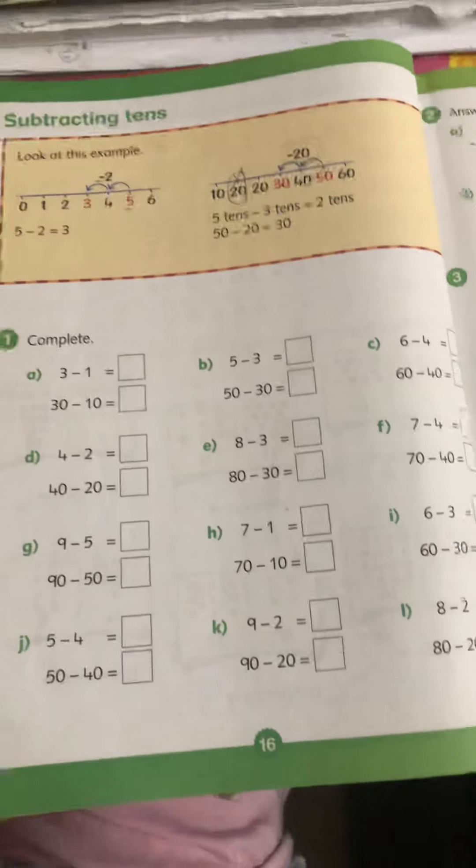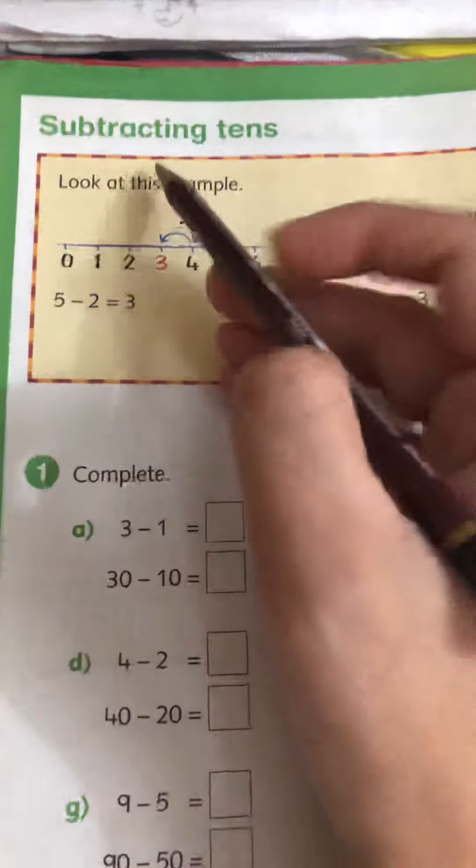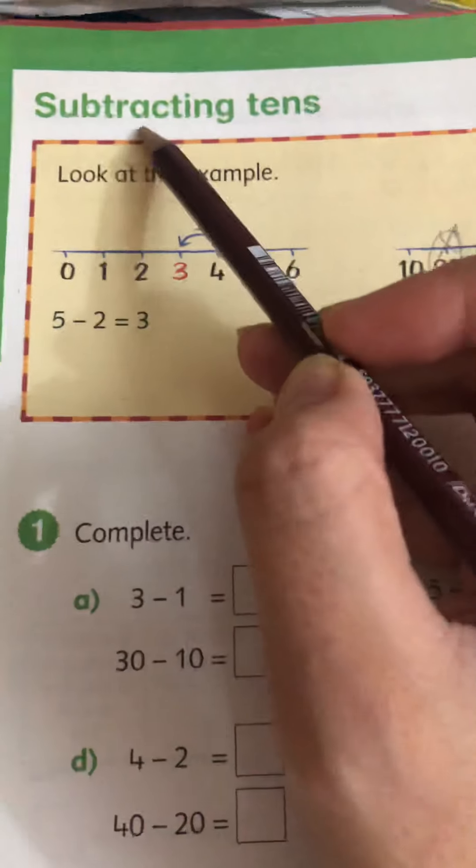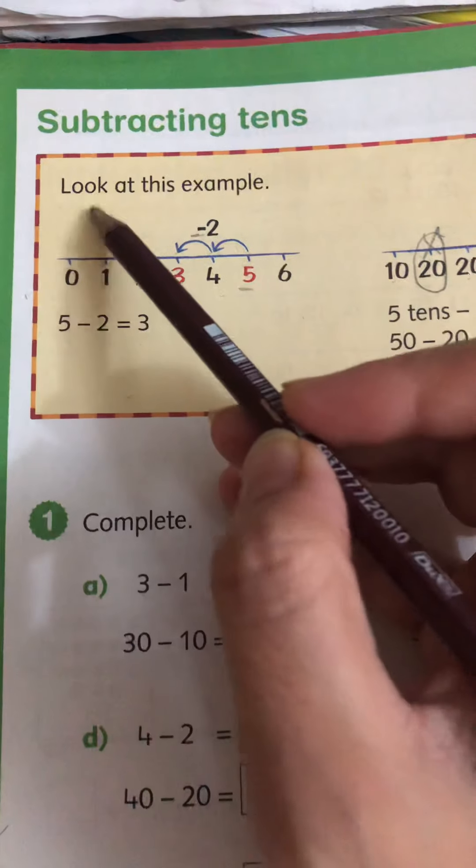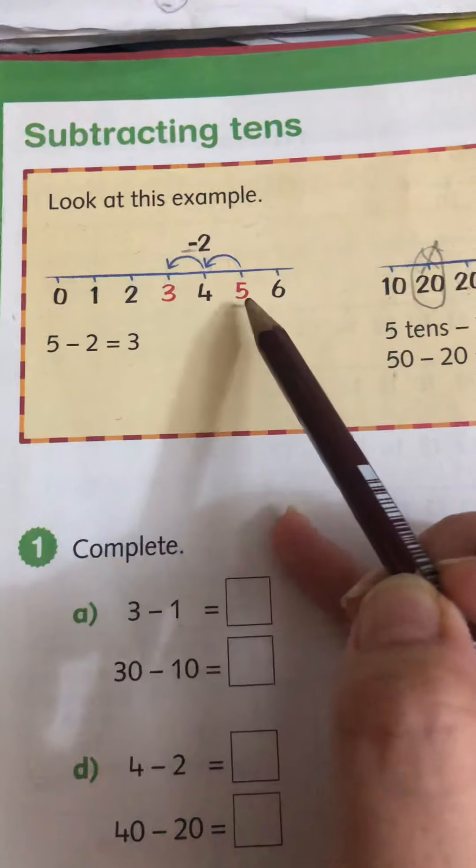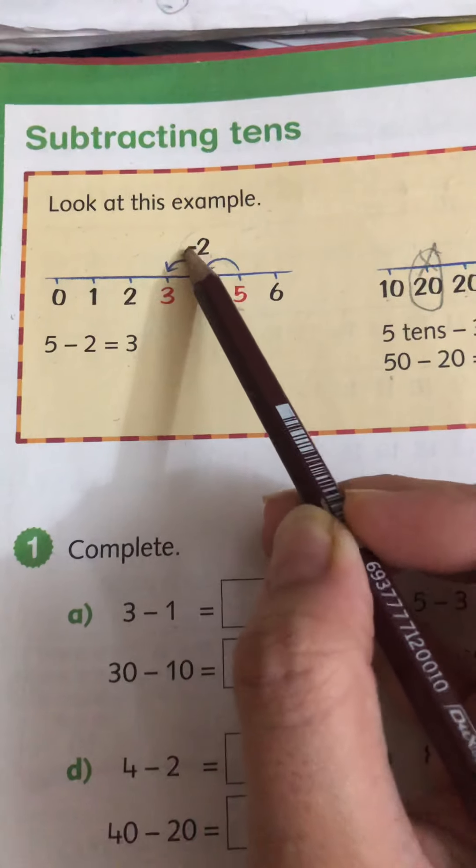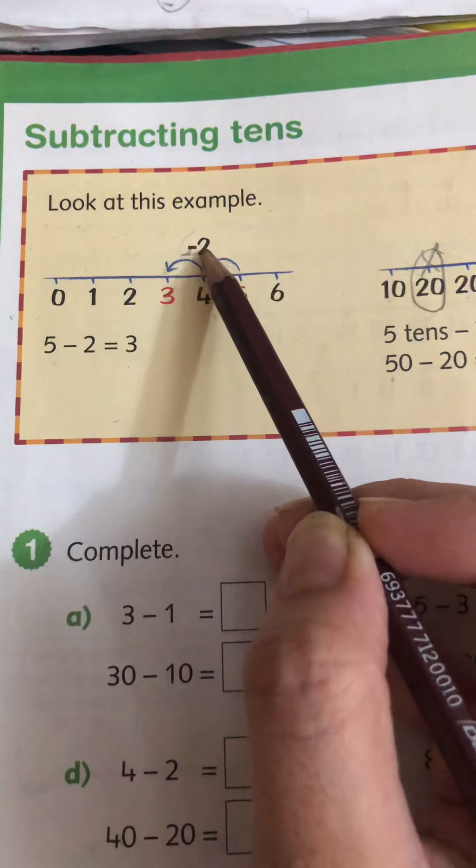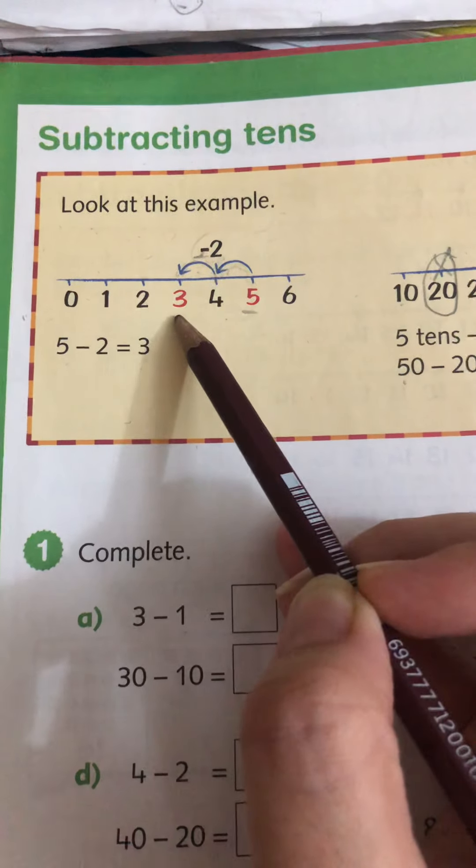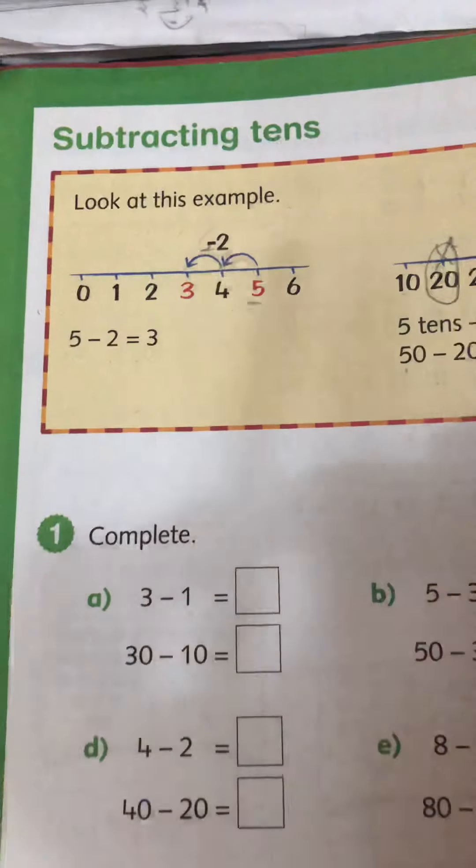Welcome class prep. This is page number 16 and let's read the topic. Subtracting tens. Look at this example. 5 jump backwards mean minus. How many jumps? 2. 5 minus 2, answer is 3.